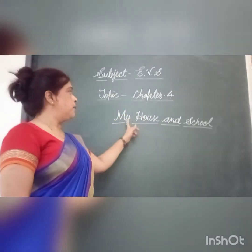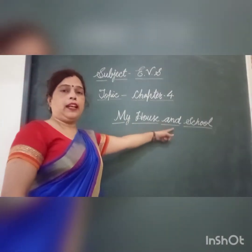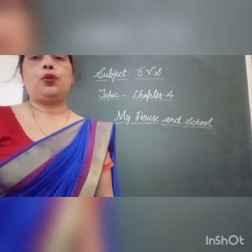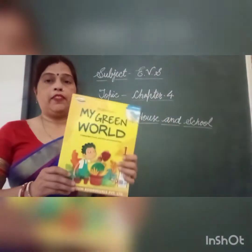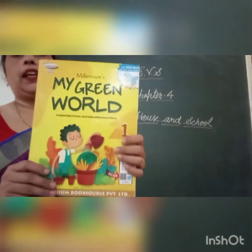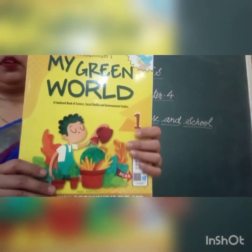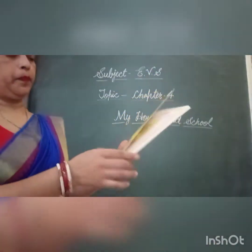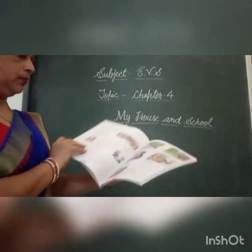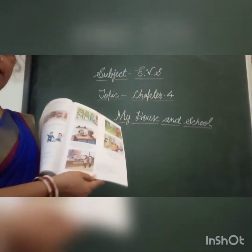Our chapter name is My House and School. So take your EBS book, My Green World. Open your book, page number 31.